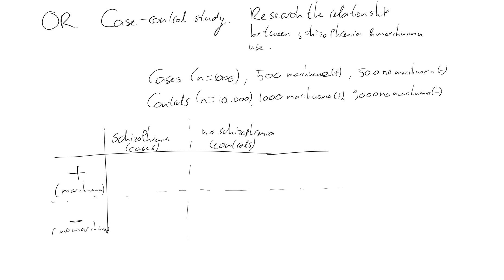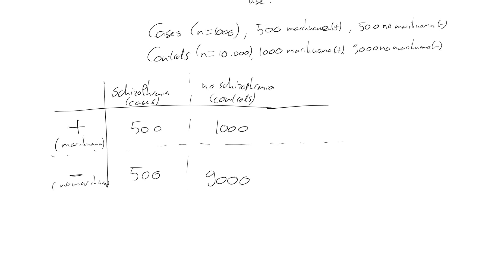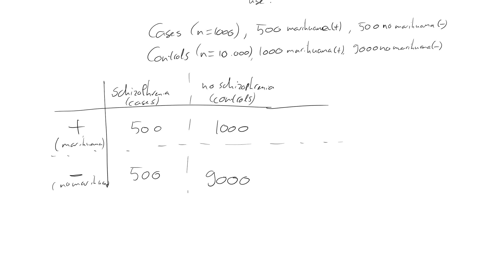Now, of the cases, 500 used marijuana and 500 did not. And of the controls, 1,000 used marijuana and 9,000 did not. The total number of cases was 1,000 and the total number of controls was 10,000.